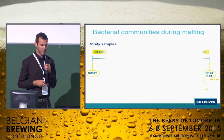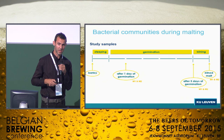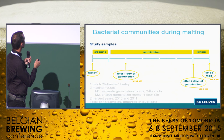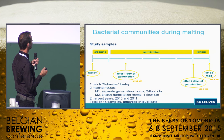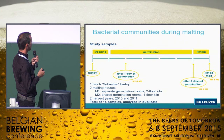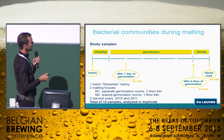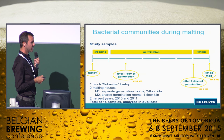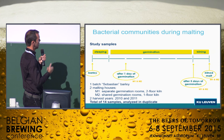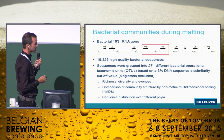Coming back to the system we've studied — we took samples during the process, starting with the barley. We had one batch of barley given to one malting company with two malting houses: one with separate germination rooms and a two-floor kiln, and the second with a short germination room and a one-floor kiln. Samples were taken from the barley, after one day of germination, after five days of germination, and from the kilned malt. We did this in 2010 and 2011, obtaining 14 samples analyzed in duplicate.